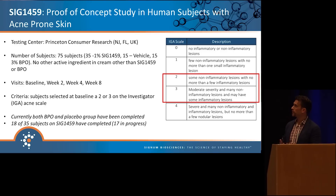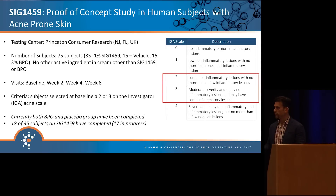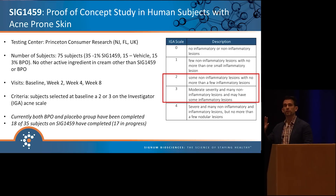We wanted to select one lead and conduct a proof-of-concept study in human subjects with acne-prone skin, as well as a clinical tolerance study. We set up a 75-subject study: a two-to-one randomization with SIG1459 at 1% in a topical formulation, a vehicle arm with 15 subjects, and a positive control using BPO at 3%, with four site visits. Subjects had to score either a two or three on the acne IGA scale. The data I'll be showing is for 18 of the 35 subjects who have completed so far; the full study should finish at the end of May.